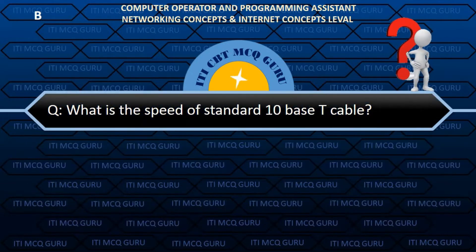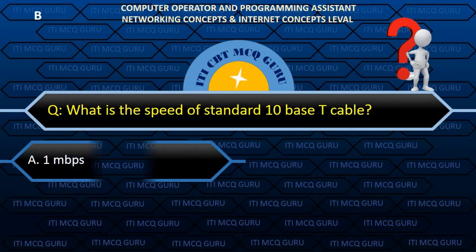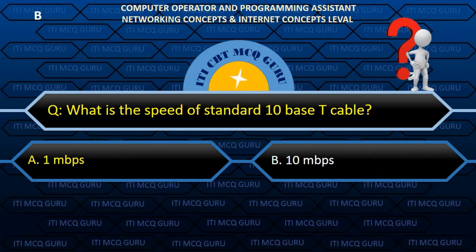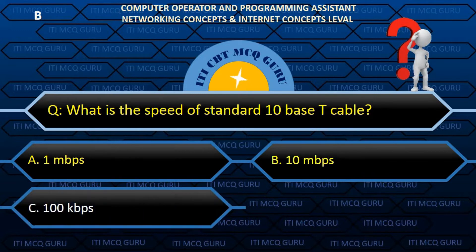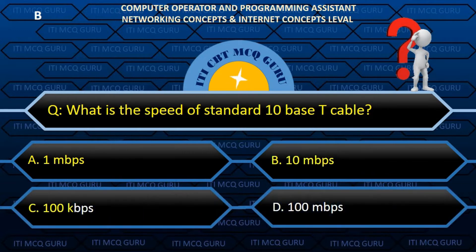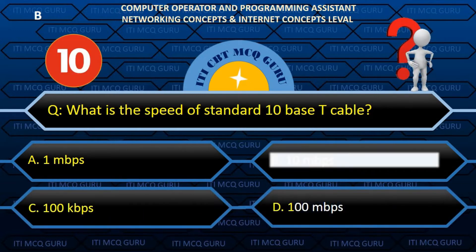What is the speed of standard 10Base-T cable? B. 10 Mbps.